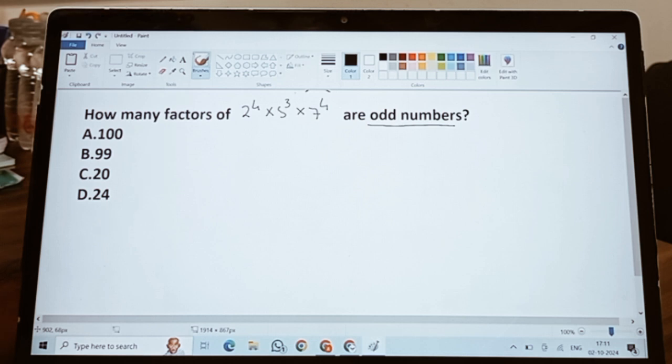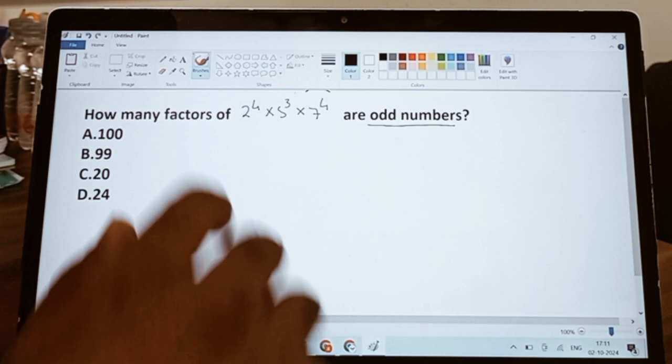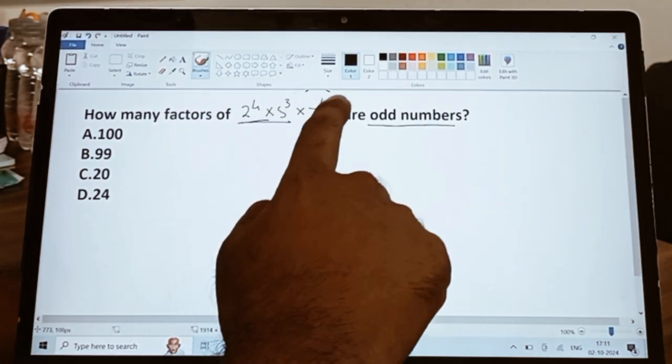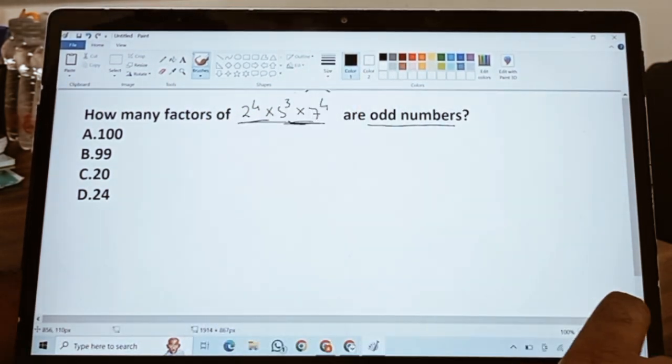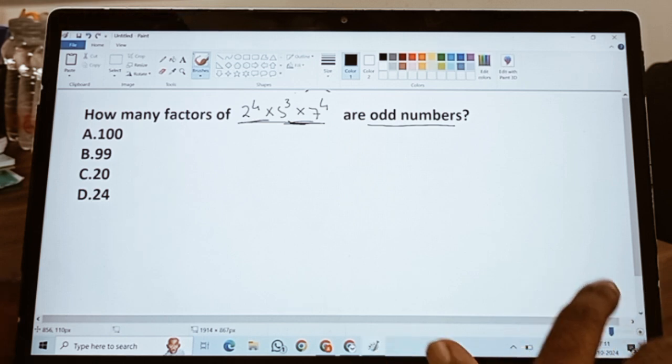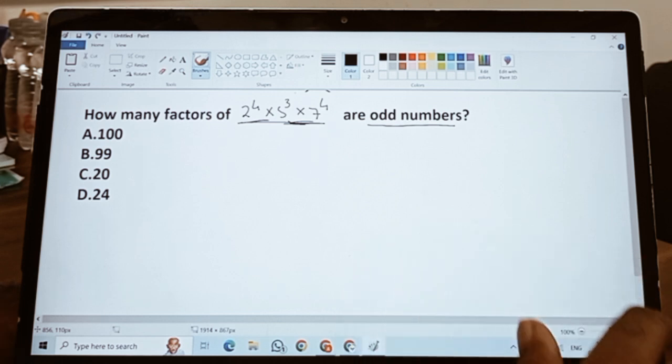The question is: how many factors of 2^4 × 5^3 × 7^4 are odd numbers? Now, the same kind of question I have already posted on the same YouTube channel. I would suggest you to go back and watch that video first and then come back to understand this kind of question.